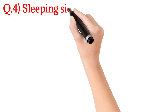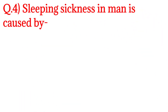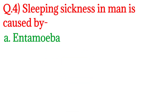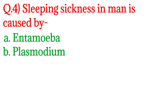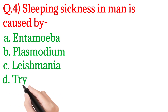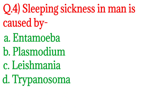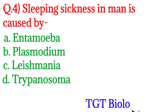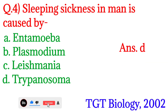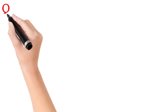Question 4: Sleeping sickness in humans is caused by? Option A: Entamoeba, Option B: Plasmodium, Option C: Leishmania, Option D: Trypanosoma. This question was asked in TGT Biology 2002. The answer is Option D: Trypanosoma. Sleeping sickness disease is caused by Trypanosoma in humans.